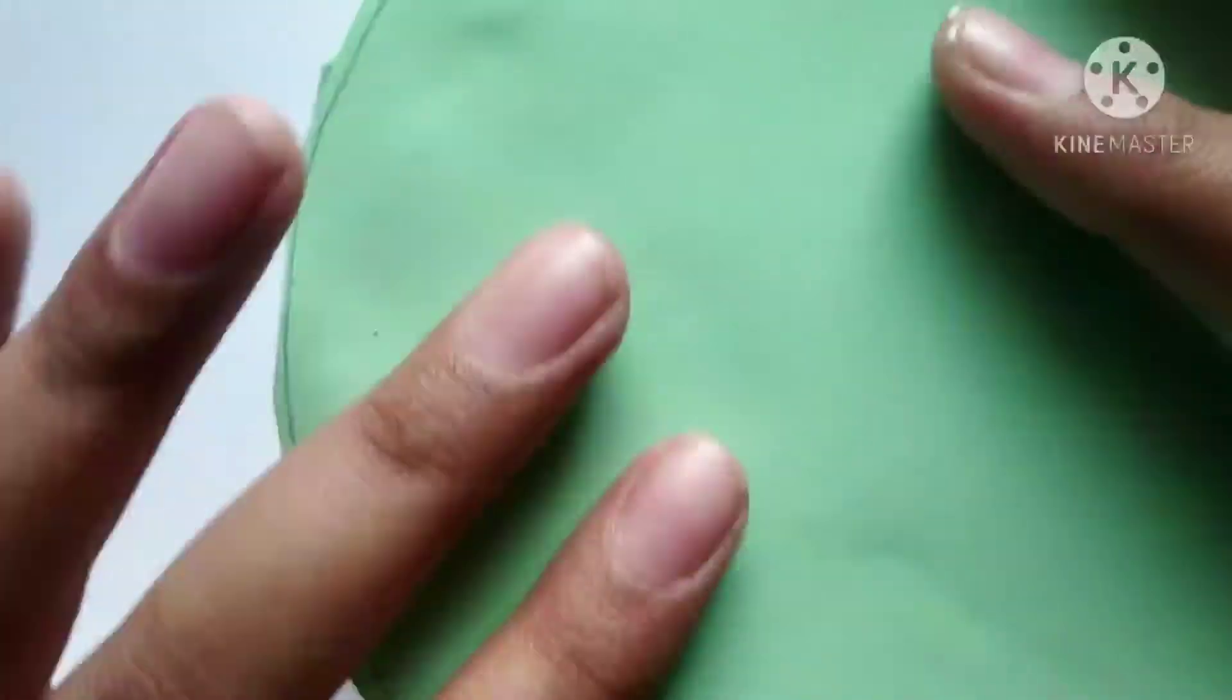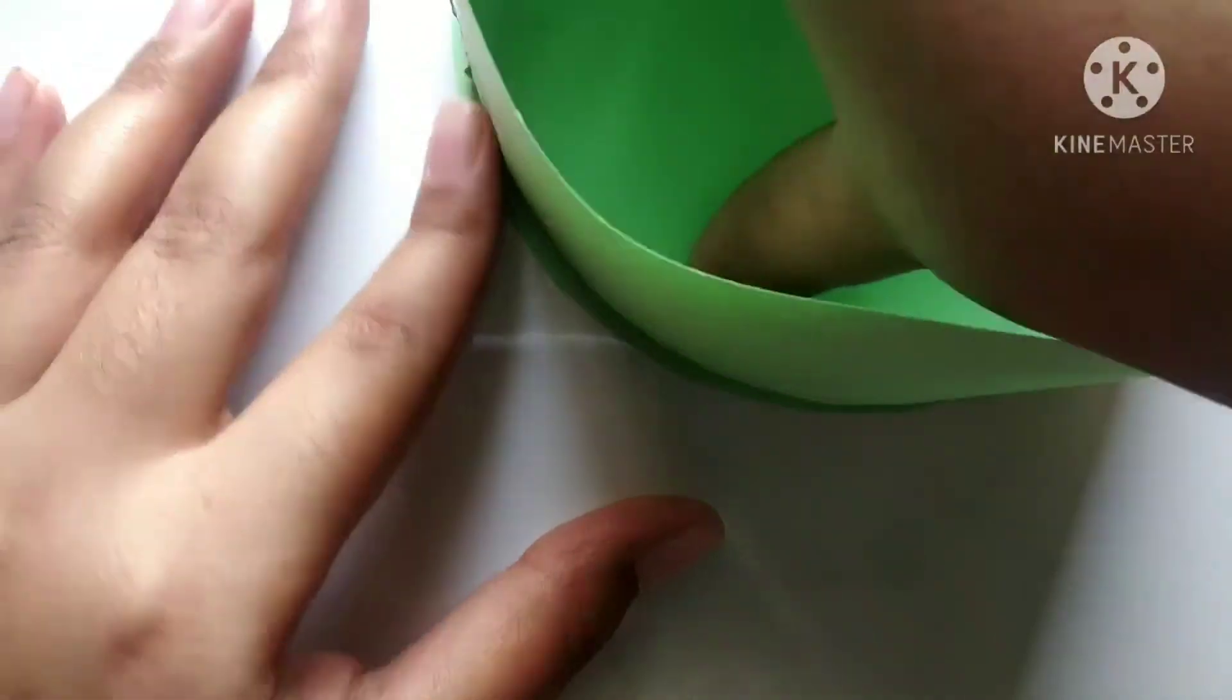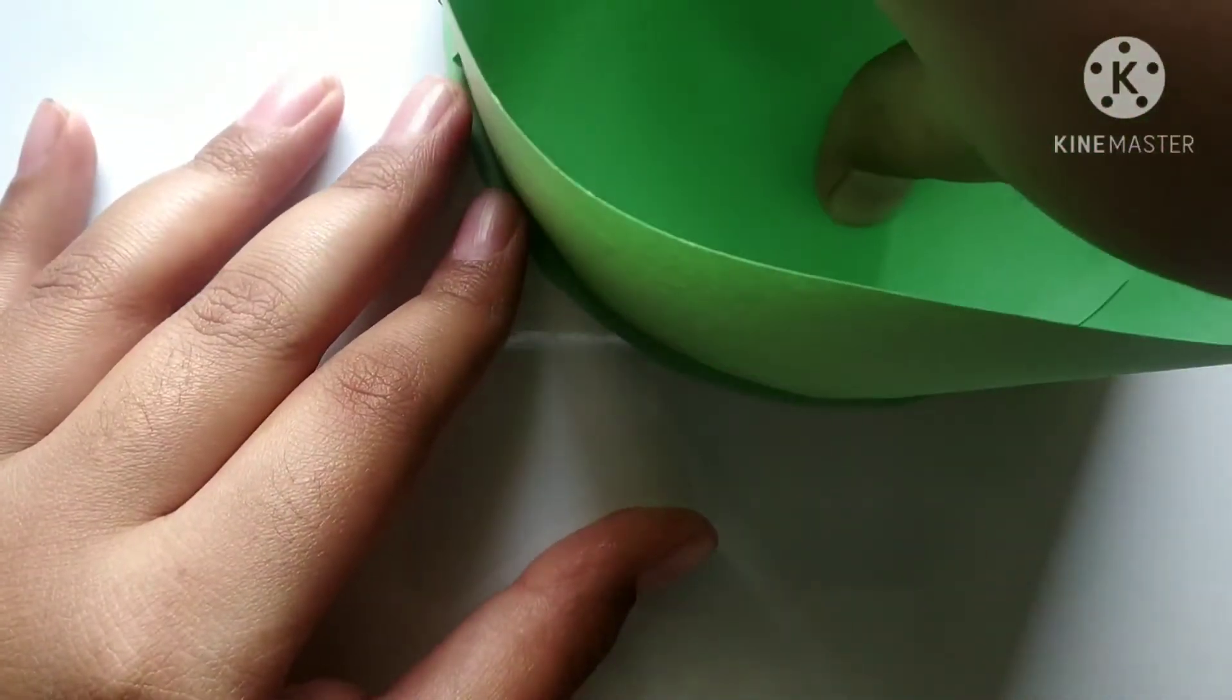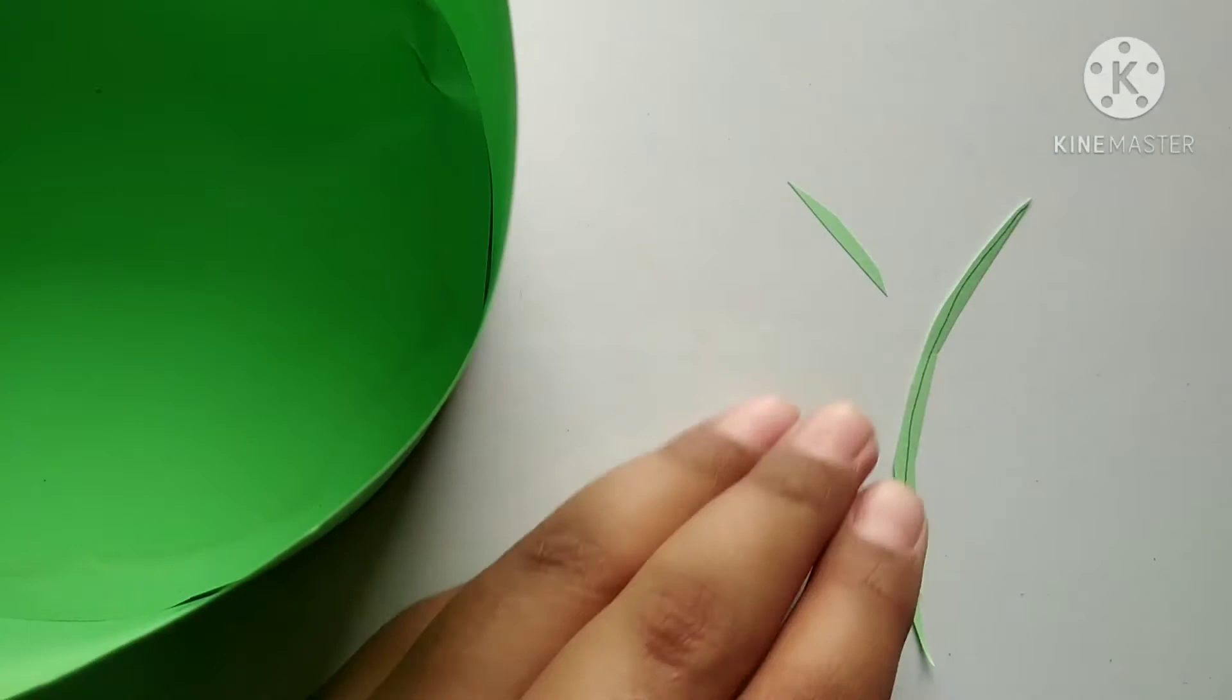Now we need to do the same, covering all of this. Turn it back and press here onwards. Now we need to take the scissors and cut the extra. See friends, our base is completed.